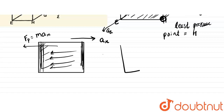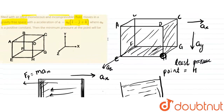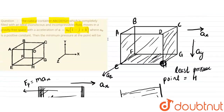This container has liquid force, which is the force of gravity in the downward direction. When gravity is the force, the pressure is at the bottom surface, which is the pressure of the top force. In these cases, when we have acceleration, we apply the force in that direction — the pressure is less in the direction of acceleration, so the least pressure is in the direction of acceleration.